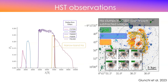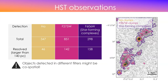We have over 300 H-alpha clumps and around 800 clumps detected in the ultraviolet (F275W and HST filters). These UV-detected clumps are embedded in larger structures we call star-forming complexes, detected in the optical — around 300 of these. Note that we have a PSF of 70 parsecs, but some objects remain unresolved. Some of these objects are co-spatial: you have clumps inside clumps inside complexes.